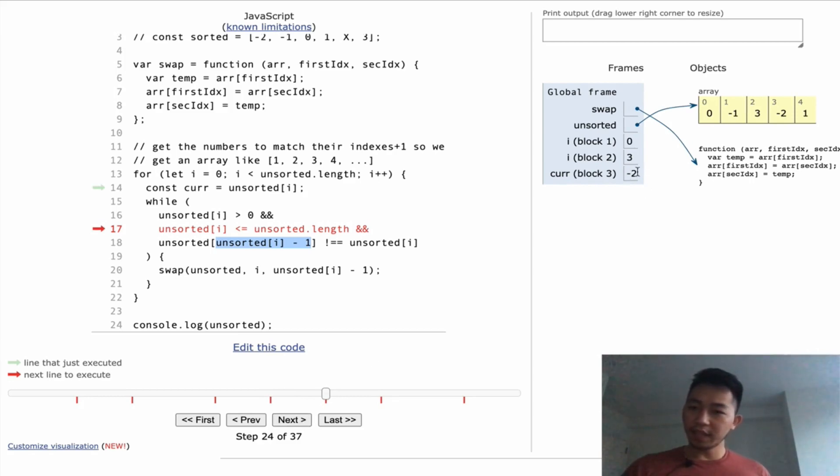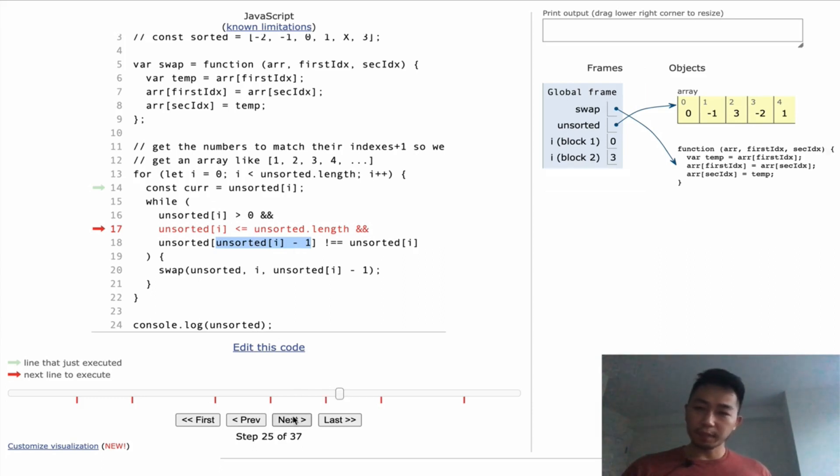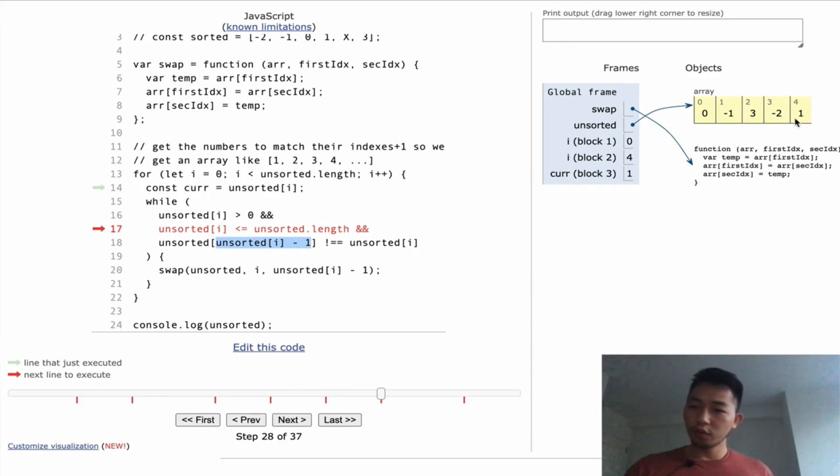And now we're going to process negative two. So now we're here. We're going to process negative two, and it's not positive, so we're going to skip it. And now we're going to process here. Now we're at the very end, we're going to process one. And we check that one is positive. We check that one is less than five. And now one minus one is zero. So we look at the zeroth element of unsorted. And we check that it does not equal one. And it does not equal one. So we go into this condition. And what we're going to do is we're going to swap one and zero. We're going to do the swap.